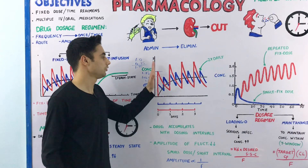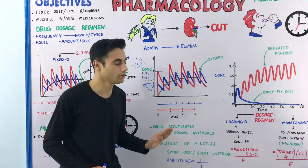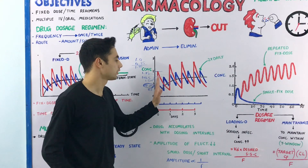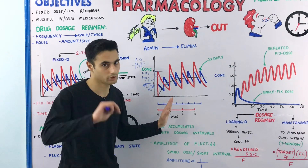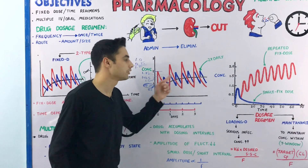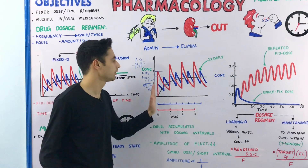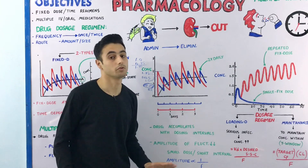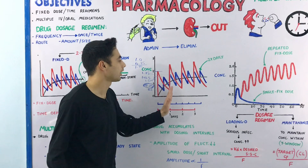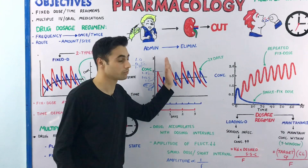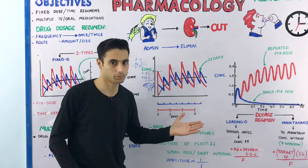To summarize the comparison: in the red graph, two units of medication are injected one time a day — dosing frequency is low, amplitude is high. In the blue graph, one unit of medication is injected two times a day — dosing frequency is high, amplitude is low. So the red graph has high amplitude and the blue graph has low amplitude.